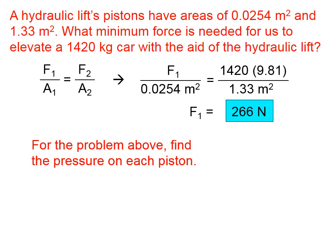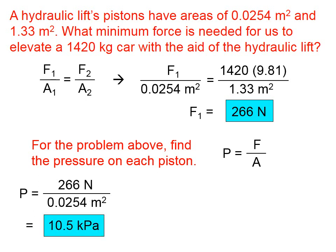Now, for this problem, let's find the pressure on each piston. Well, pressure is force divided by area. So for the small piston, the force is 266 divided by the area. That gives us roughly 10,500 pascals, but I've just changed it into kilopascals.